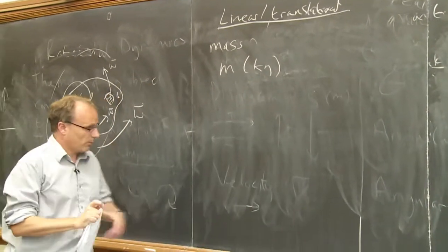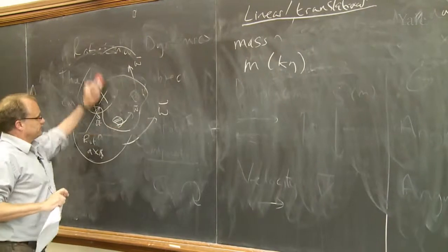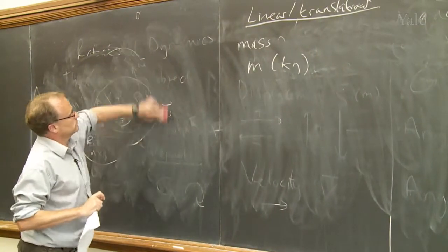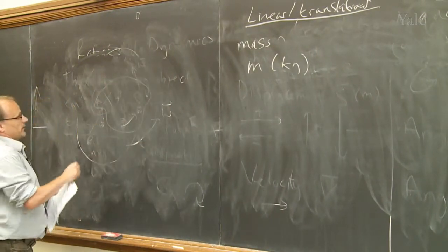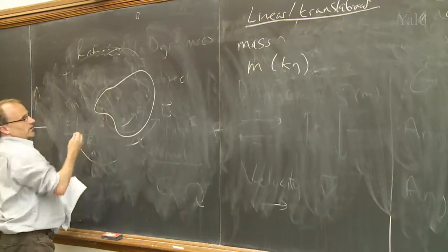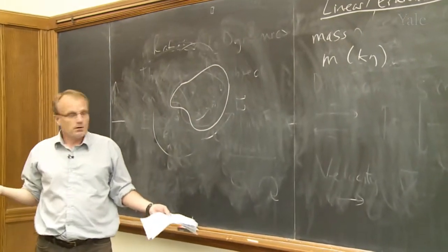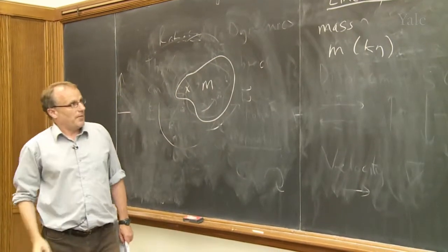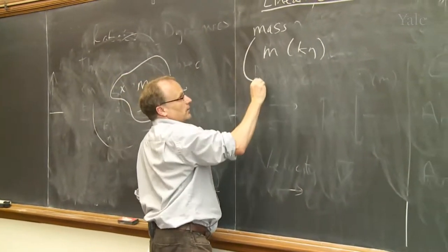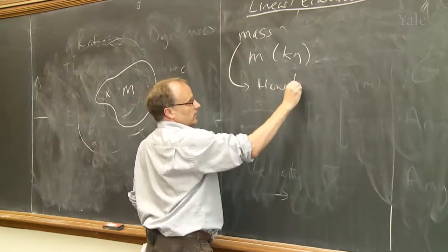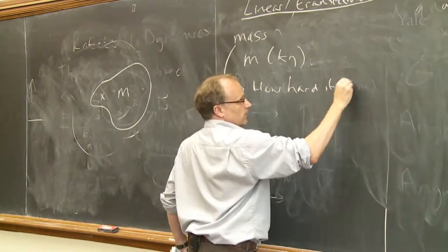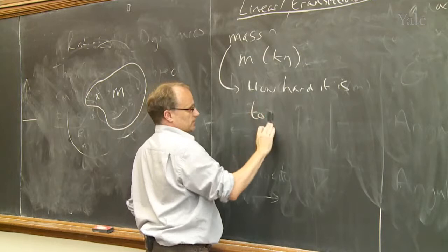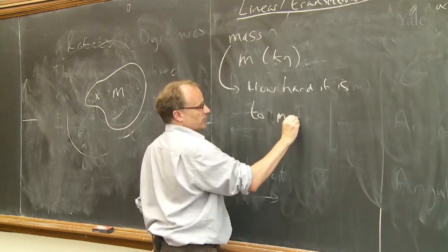So this blobby object that I drew over here, which is something like this, this is my mass. This has a mass m, and the mass tells you how hard it is to move something or to accelerate it.